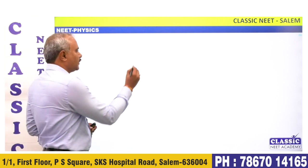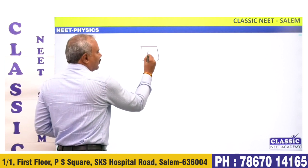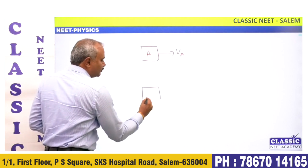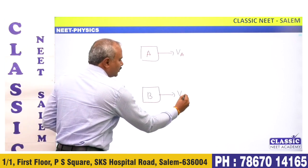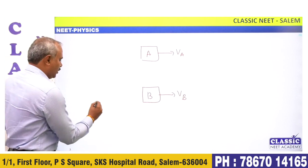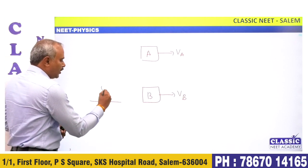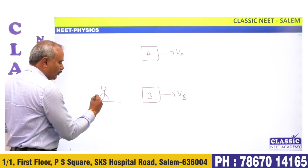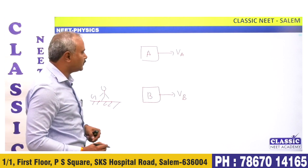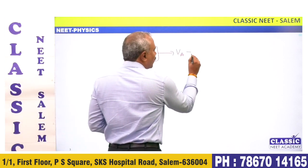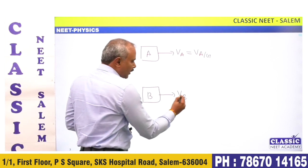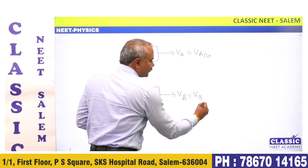So we go here — say body A has velocity V_A, body B has velocity V_B. If you look at the ground and say that body A can move with a certain velocity, that's the velocity of A with respect to ground. If you say the velocity of B, you mean the velocity of B with respect to ground.